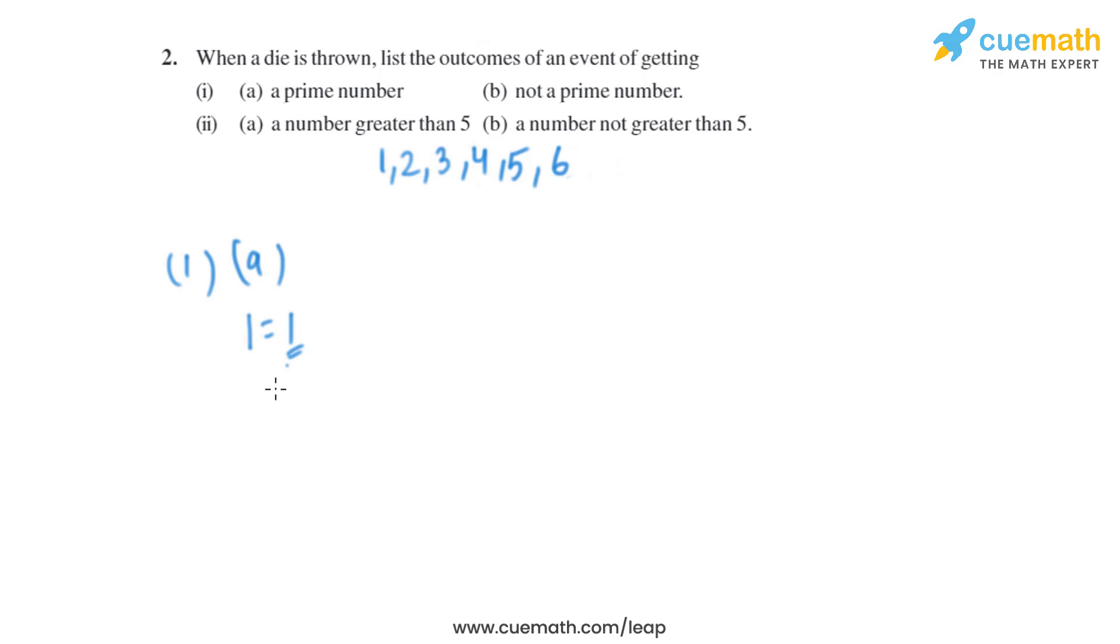One is not a prime number because it has only one factor. Two is a prime number because it has two factors. Similarly, three is a prime number. But when we look at four, four is not a prime number because it has more than two factors. So the prime numbers are 2, 3, and 5.